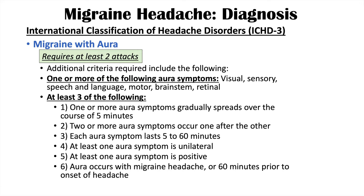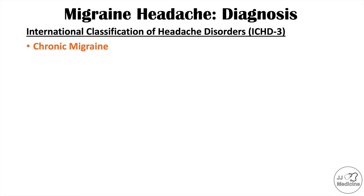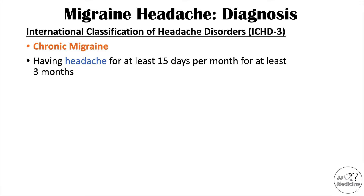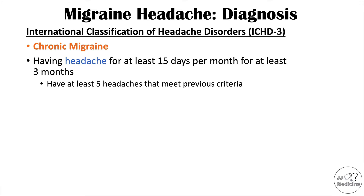Another type is chronic migraine. To diagnose chronic migraine, a patient must have had a headache for at least 15 days per month for at least three months, meeting the criteria for either migraine without aura or migraine with aura, and having experienced at least five headaches meeting those criteria.